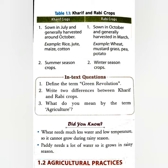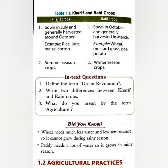Now for the in-text questions, you can solve them. Define the term Green Revolution. Next, write two differences between Kharif and Rabi crops. What do you mean by the term agriculture? You can write the answers. Now we will go to the next agricultural practices. Thank you.